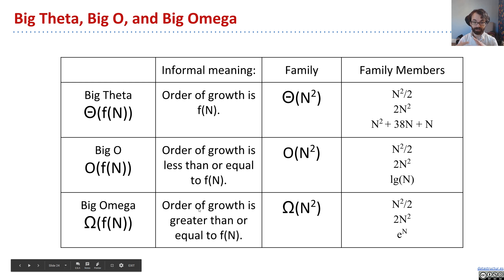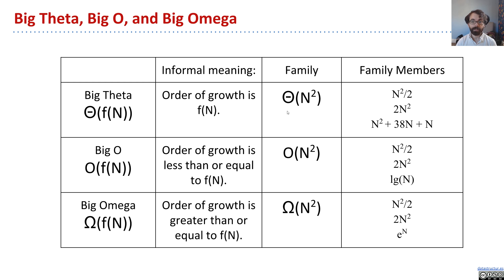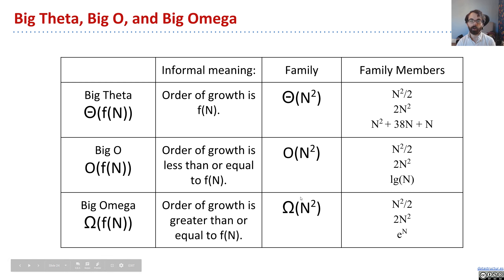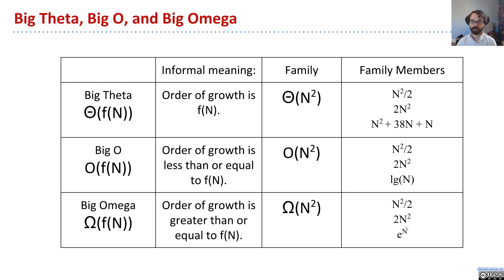To summarize all of the pieces of our toolbox: we have big theta, big O, and big omega. If we think about this as a family, big omega n squared includes all functions that grow at least as fast as n squared — for example, n squared over 2, 2n squared, and e to the n, which is much faster.